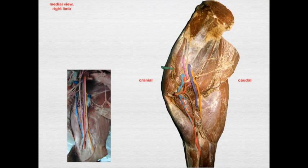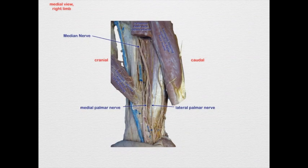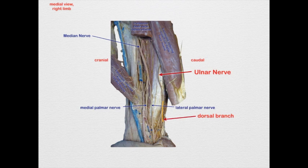The next nerve we'll trace down is the ulnar nerve. As I said, it doesn't run with the median as it did in the dog. It's going to be accompanied a short time by the radial nerve, and it's going to pass caudally as it gets to the cranial aspect of the tensor fascia antebrachii muscle. It's going to give off a cutaneous branch, which we will cover at the end of this lecturette. As it courses down the antebrachium, it's also going to divide into a dorsal branch, which will come out on the lateral surface and course around dorsally as a cutaneous branch mostly.